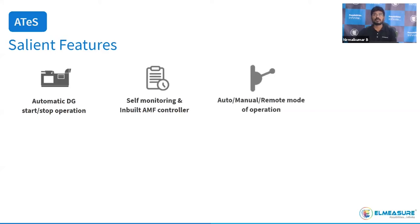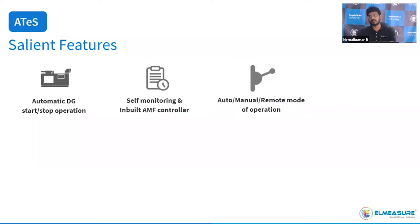The third mode is remote mode, available in three options: control via the remote display; RS-485 communication, through which the customer can integrate the system to the cloud and an EMS system; and SCADA or EMS integration for remote controlling and monitoring. So we have auto mode, manual mode, and remote mode with three sub-features: remote display, cloud connectivity, and SCADA or PLC operation.